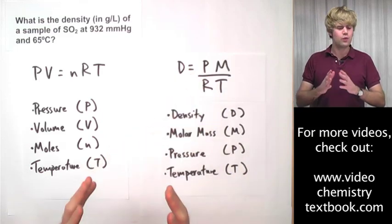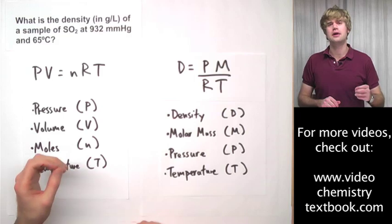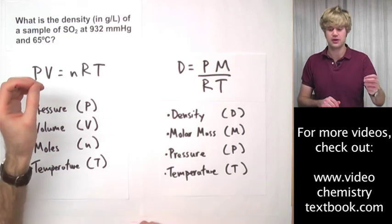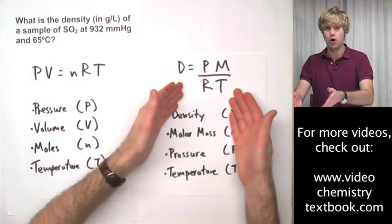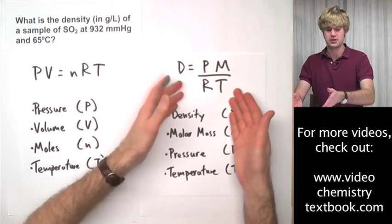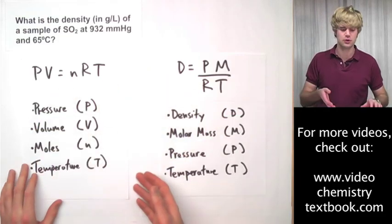So when we're doing an ideal gas law question that asks us about the density of a gas, we have to use this alternate form of the ideal gas law equation instead of PV equals nRT.